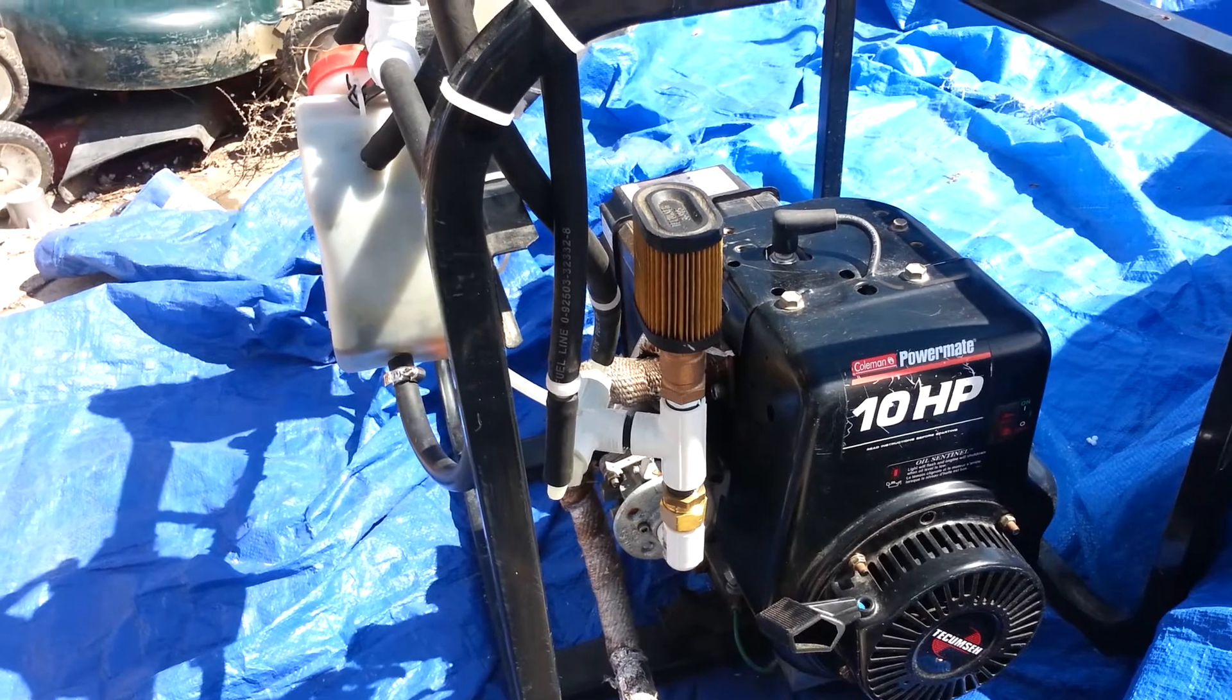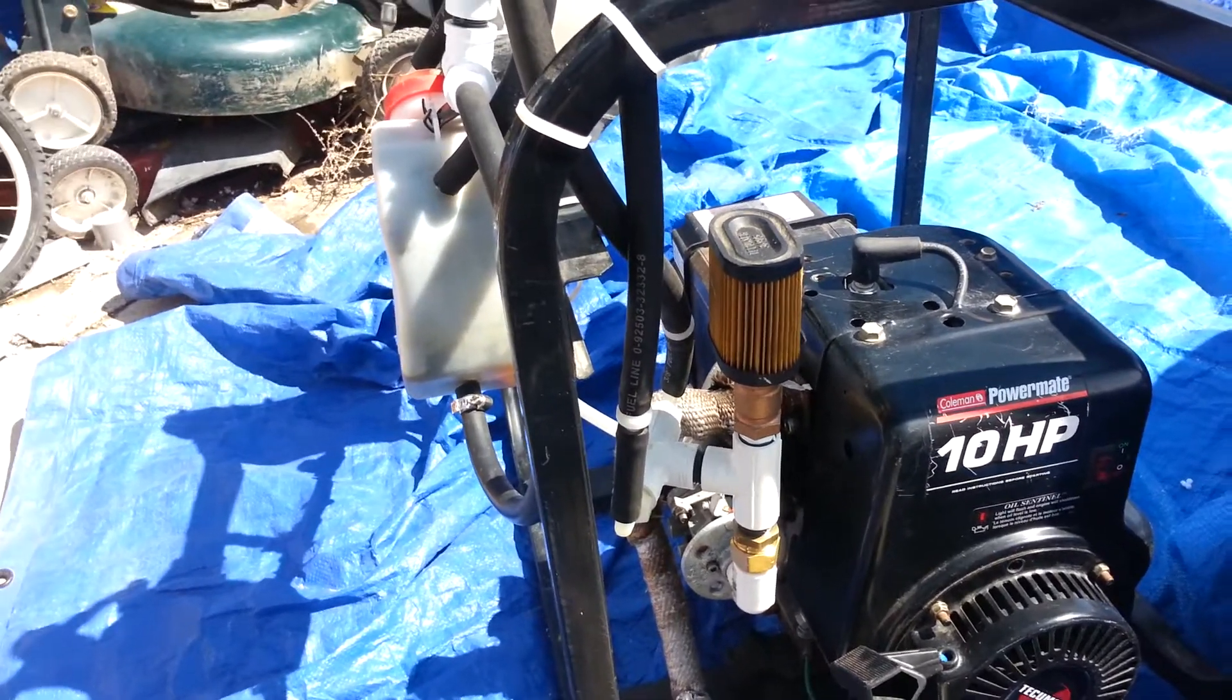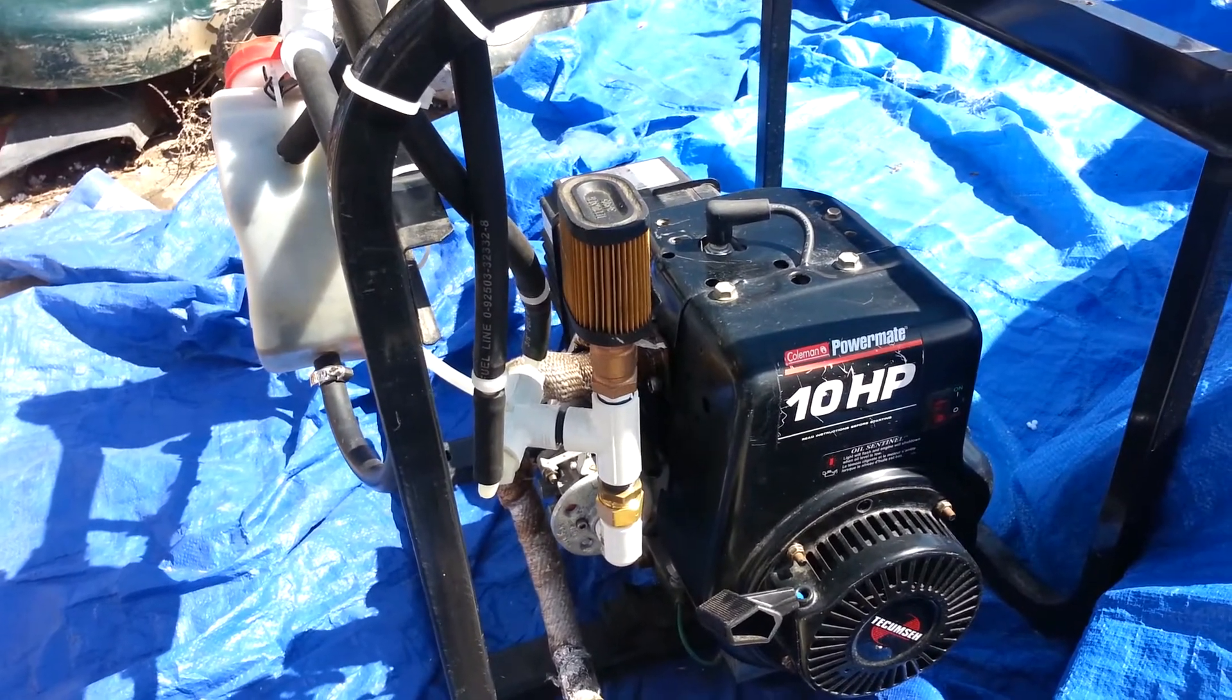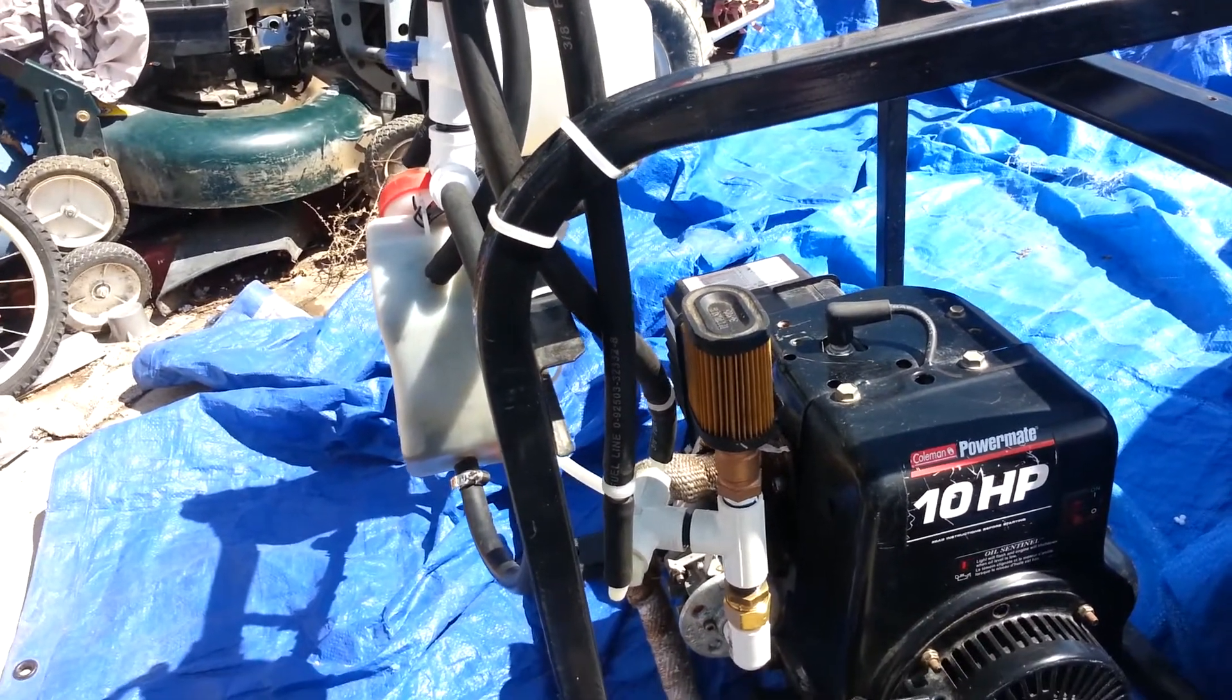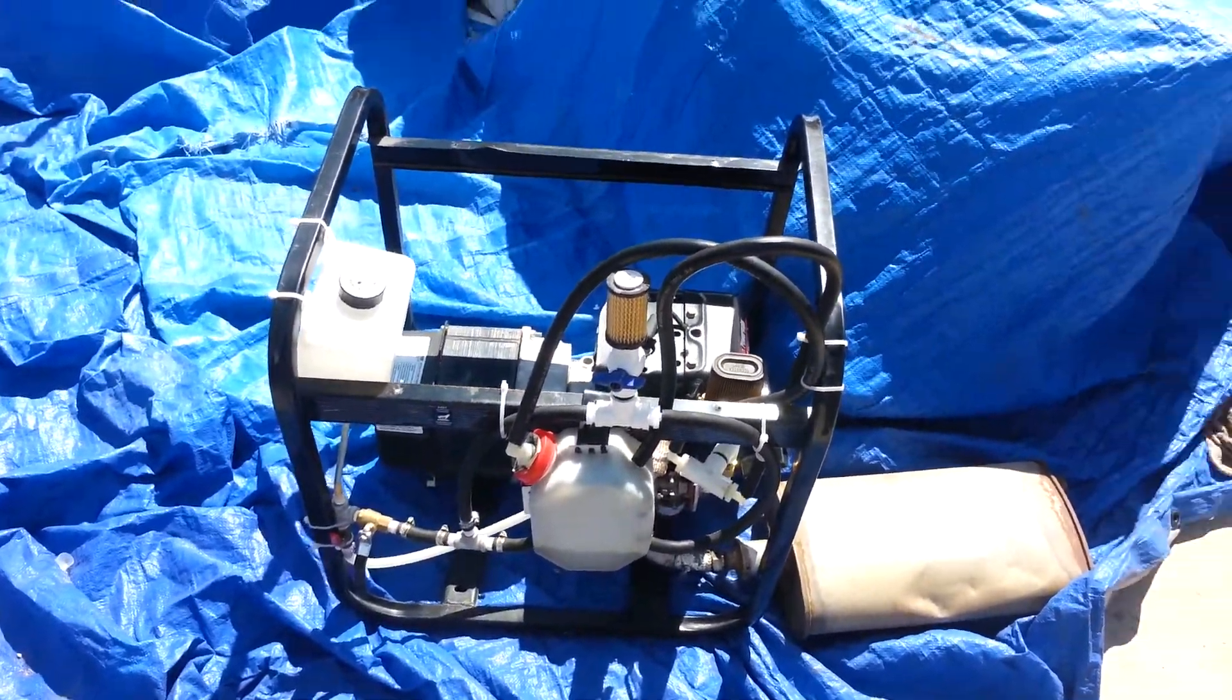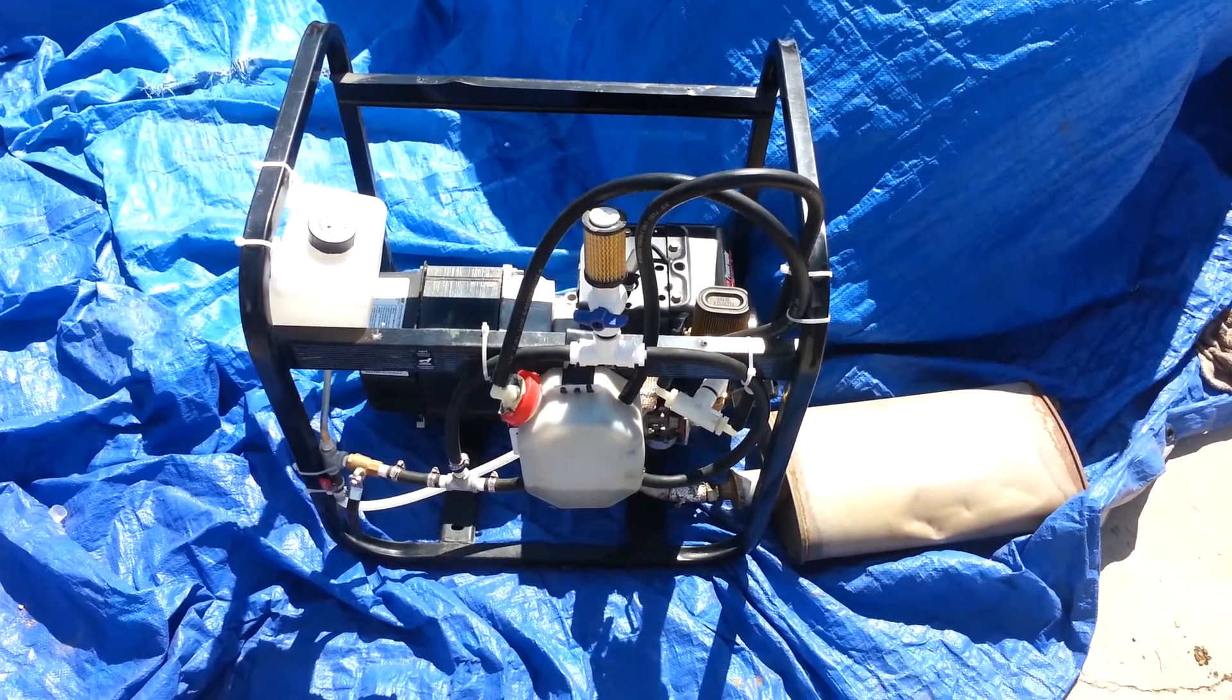I have the check valves in place so that if I get a backfire or when I get a backfire, the pressure doesn't blow back into the vaporizer. I have the flashback arrestor installed so that a fire cannot go back into the vaporizer either. And I have a shutoff valve on the intake so that I can close it so that gas does not evaporate out when I'm not using the system.